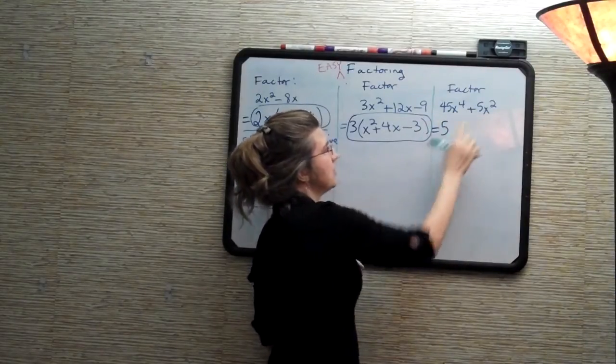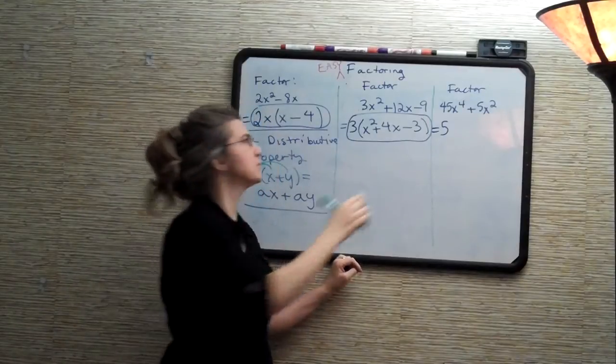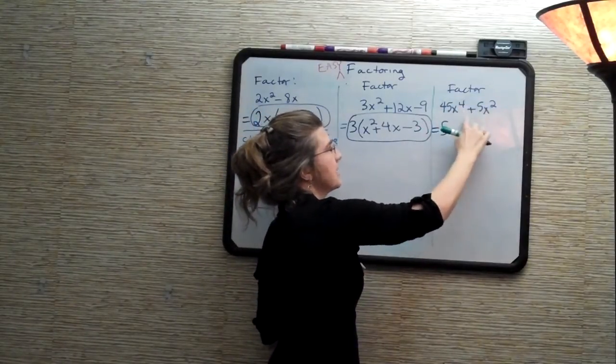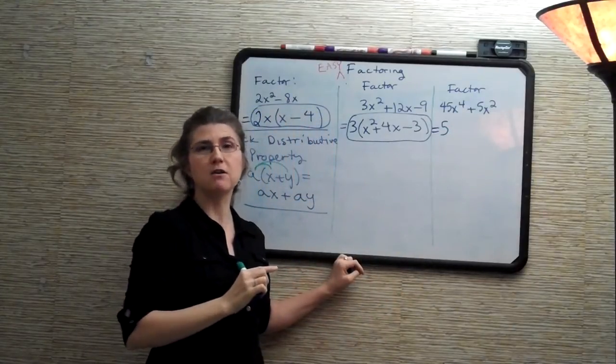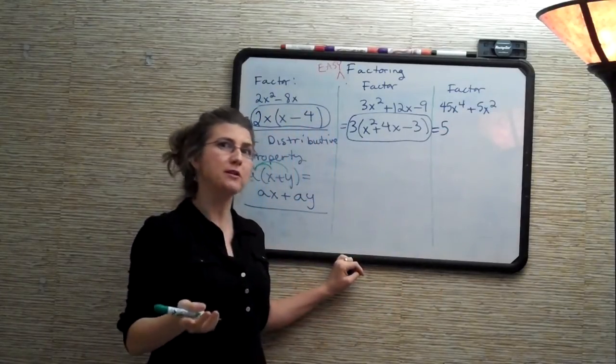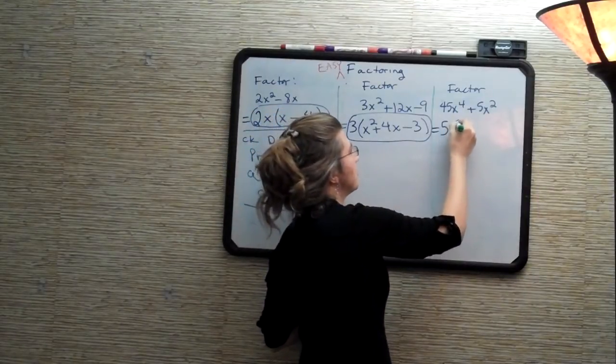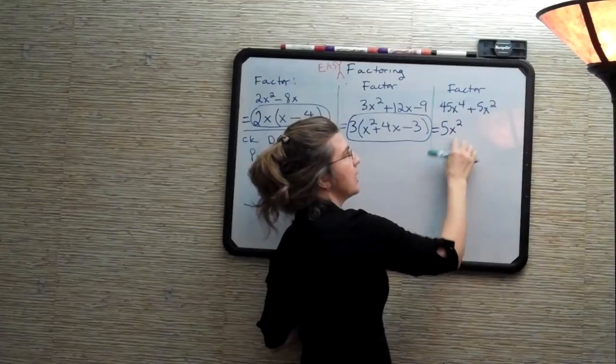What is the biggest power of x that's common to both terms? So this is one term, 45x to the fourth. This is the second term, 5x squared. The biggest power of x that's in both is the lowest power of x present. So that would be x squared. Can you see that x squared goes in here and also goes in there?